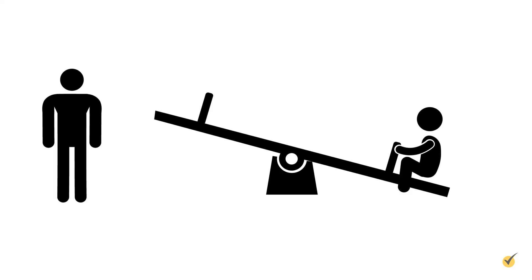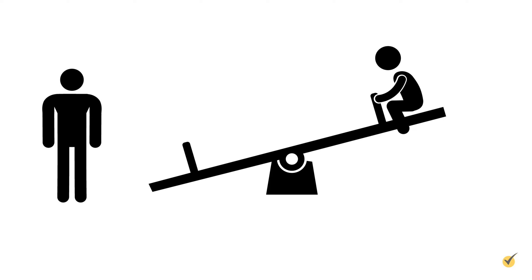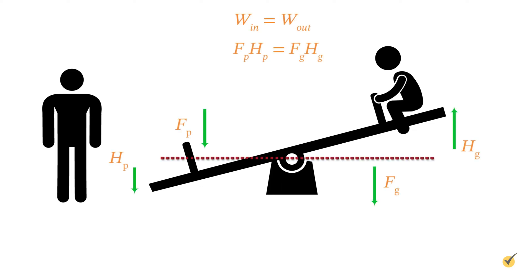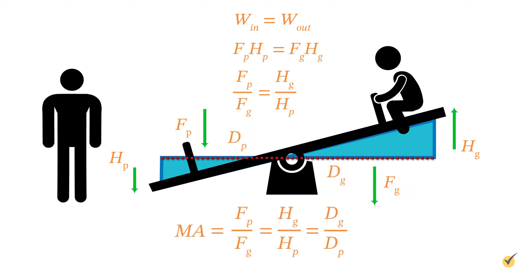Now that we've established that work in equals work out, let's take a look at a simple lever system to derive the mechanical advantage equation. Here we have a seesaw with a child sitting on one end and you standing by the other end. When you push down on your end of the seesaw, your force down times the distance you push is equal to the force of gravity times the change in height of the child. Rearranging this equation — forces on one side, heights on the other — we get Fp over Fg equals Hg over Hp. Each of these is a way to express mechanical advantage. Since these are both similar triangles, the mechanical advantage equation can also be written as Dg over Dp. Notice that by decreasing the distance you push, you increase the force you need and lose mechanical advantage.